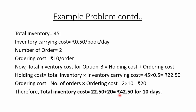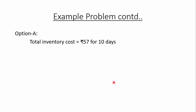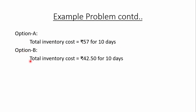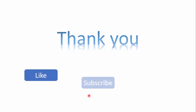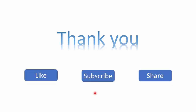Comparing the two options: Option A has a total inventory cost of Rs.57 for 10 days, while Option B has a total inventory cost of Rs.42.50 for 10 days. Therefore it is advantageous for the bookstore to use Option B — that is, to order 8 books per order. I hope you understood this lecture. If you like it, please share, subscribe, and have a nice day. Thank you.